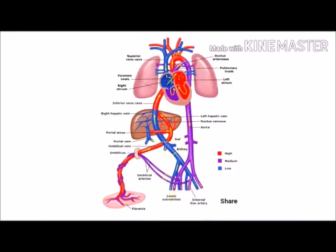The umbilical vein carries oxygen and nutrients to the fetus from the placenta. The umbilical artery carries deoxygenated blood and waste products — carbon dioxide and all — from the fetus back towards the placenta. Ductus venosus is a vein-to-vein connection; it shunts blood from the umbilical vein to the inferior vena cava, bypassing the liver and organs of digestion, connecting the inferior vena cava and the umbilical vein.